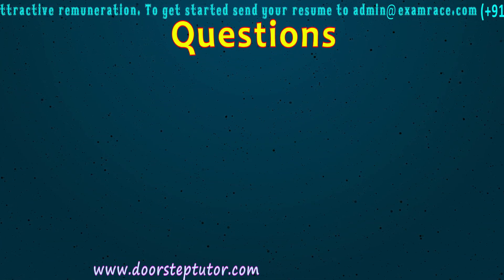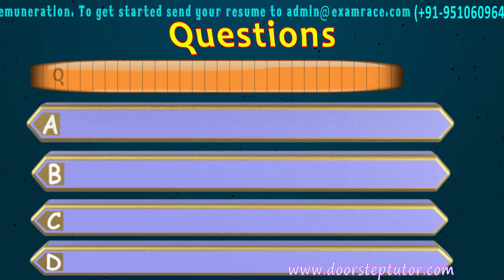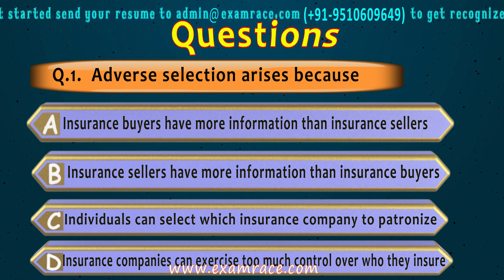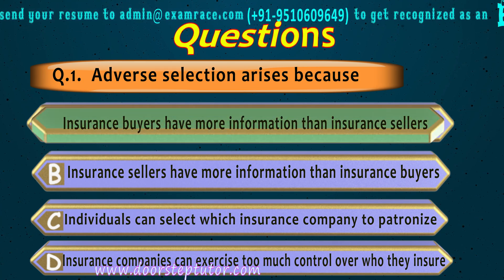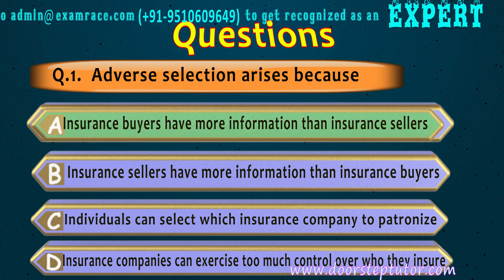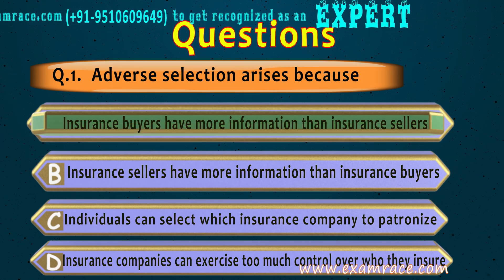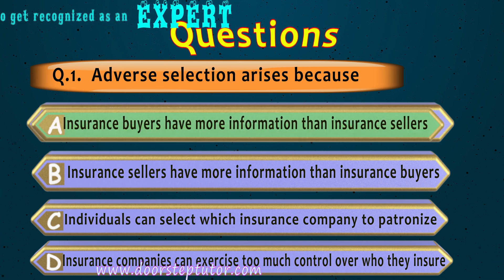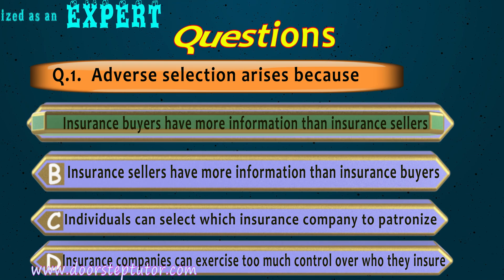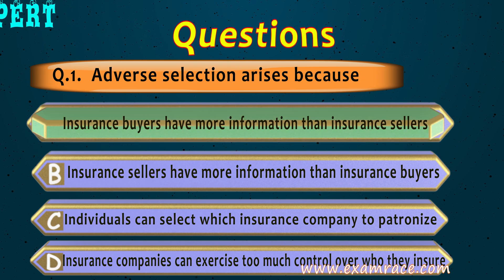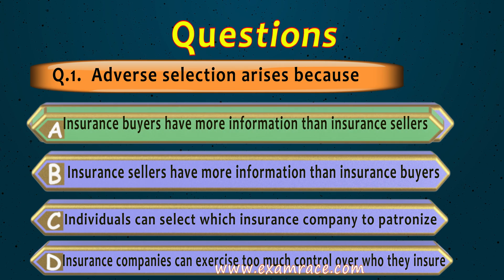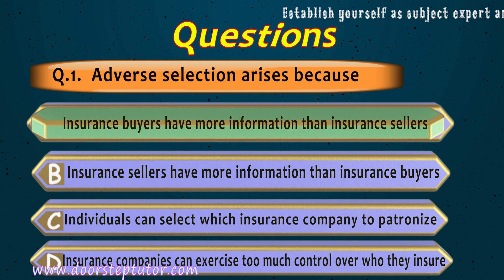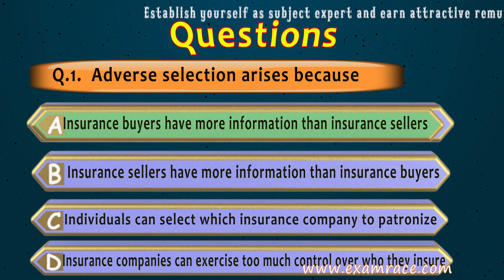The first MCQ question: adverse selection arises because — the correct answer is option A. Adverse selection arises because insurance buyers have more information than insurance sellers. The insured person may not reveal their full medical history, and thus the insurance buyer has more information than the insurance seller.